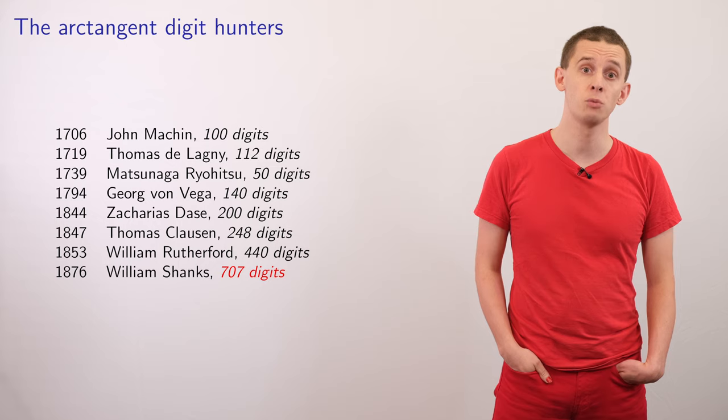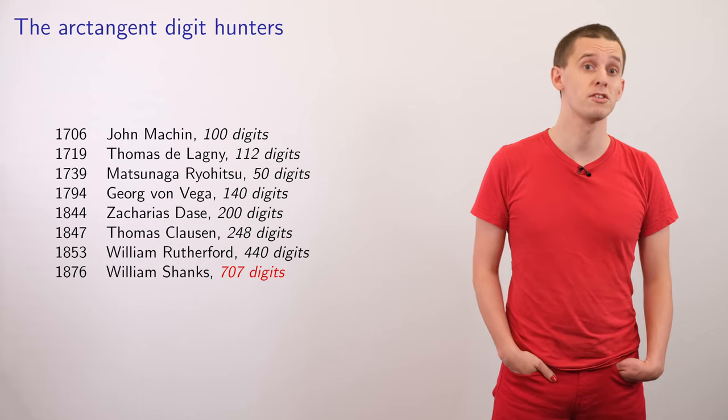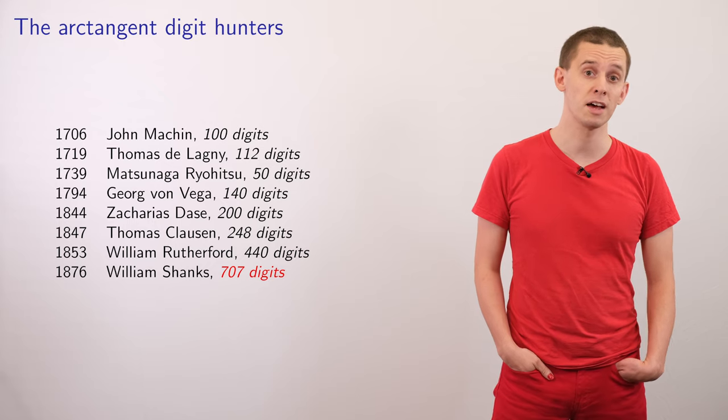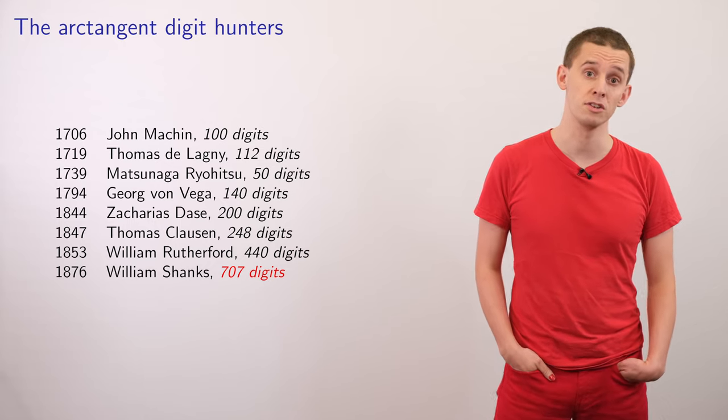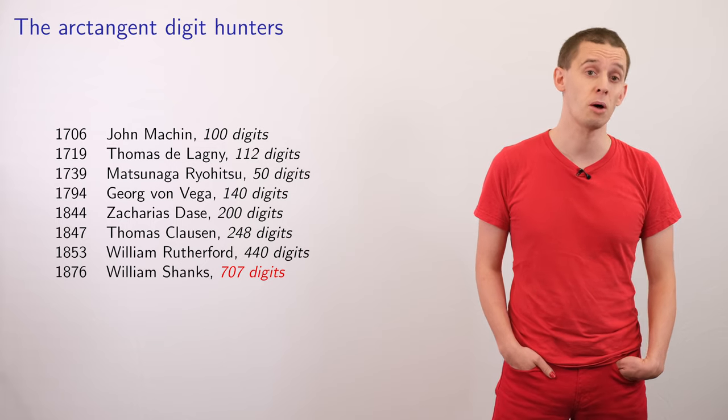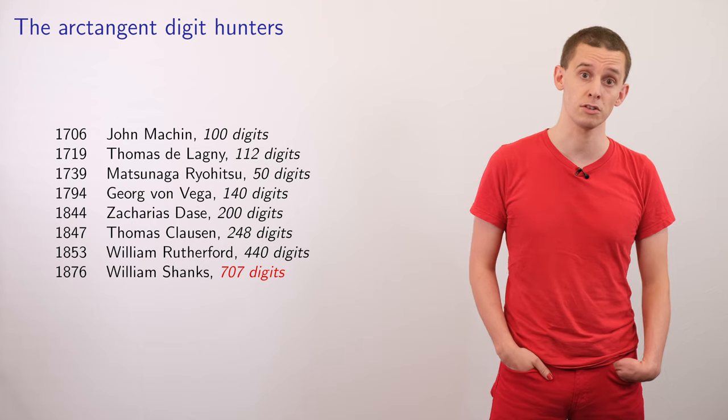And this was really the result of years of work and laborious hand calculations. But I wrote the 707 in red because it turns out that Machin actually made a mistake. And everything after 528 digits is actually incorrect. It was only discovered in the 20th century once people had mechanical calculators that could accelerate the process.